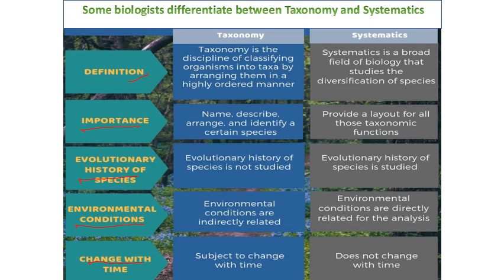Plant taxonomy is subject to change with time, while plant systematic doesn't change with time. Simply put, taxonomy is the describing, naming, and classifying of organisms in biology, using morphological, behavioral, genetic, and biochemical observations. Systematic is the study and classification of organisms for the determination of evolutionary relationships. Therefore, systematic consists of both taxonomy and evolution, and uses morphological, behavioral, genetic, and evolutionary relationships to describe an organism by means of classification, name, and phylogenetics.